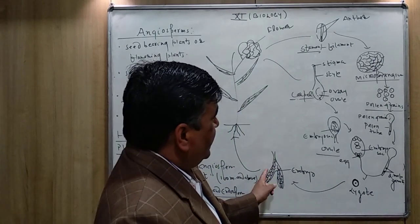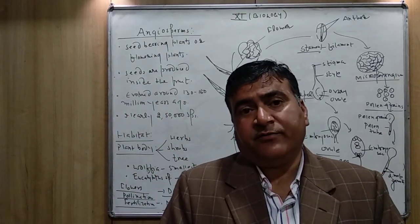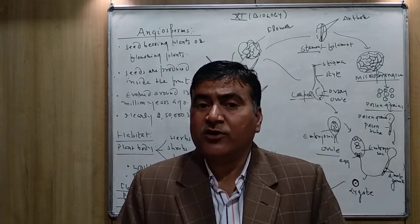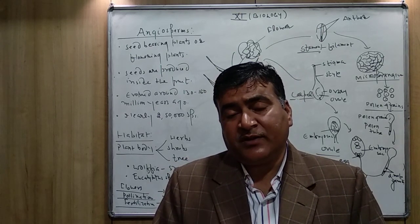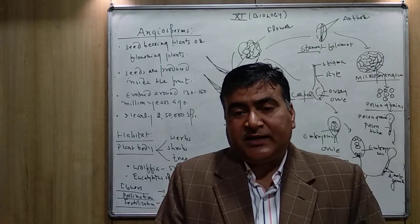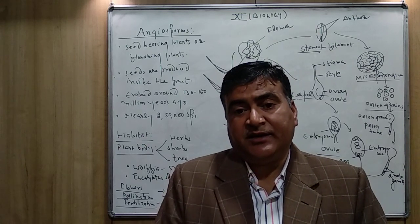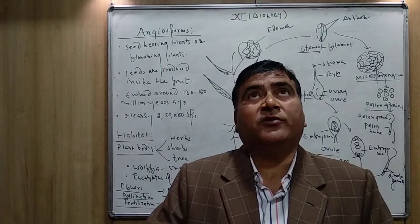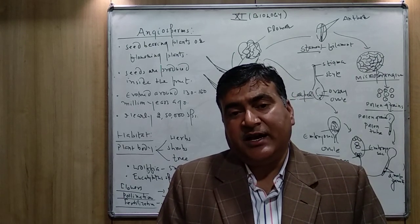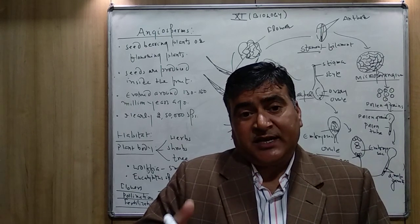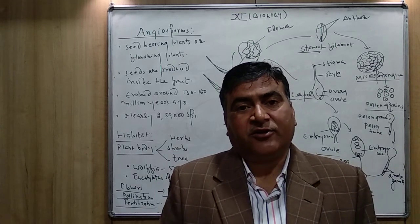In double fertilization, along with zygote formation, endosperm is also produced. Endosperm is the nutritive resource which gives food material to the developing embryo. If double fertilization does not take place, there will be no endosperm and the embryo will not develop properly. The zygote then forms the embryo. The embryo is made up of two cotyledons in dicot plants, along with the radicle and plumule. The radicle gives rise to the root system, the plumule gives rise to the shoot, and cotyledons contain food which helps in successful germination of the seed. Once leaves are produced, the cotyledons disappear.